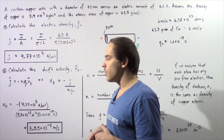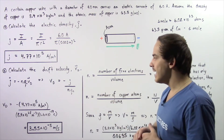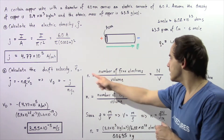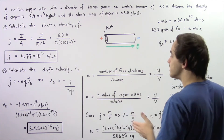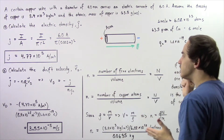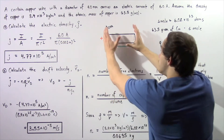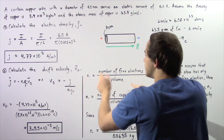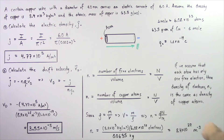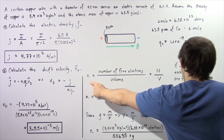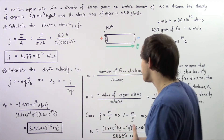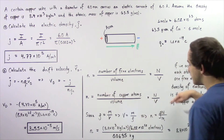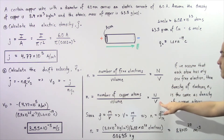By definition, the electron density n is equal to the number of free electrons within a section of the wire divided by the volume. If we make the assumption that each copper atom has only one free electron, then the electron density n is the same as the density of copper atoms — so we have one free electron per copper atom. Thus n equals the number of copper atoms N divided by volume V.